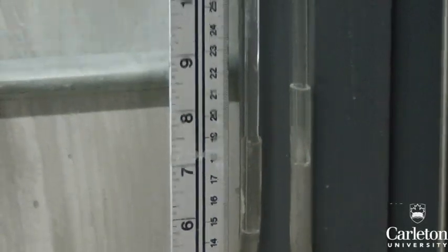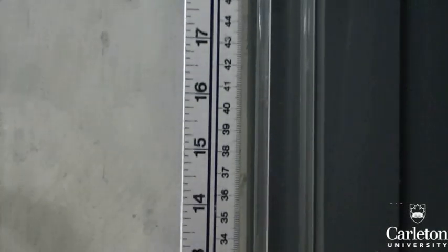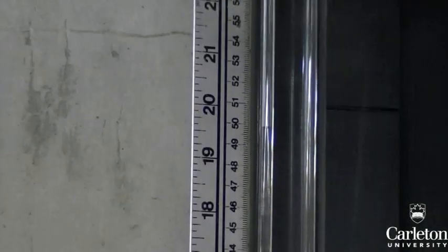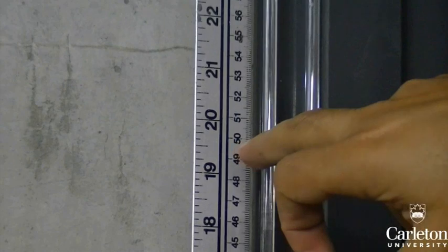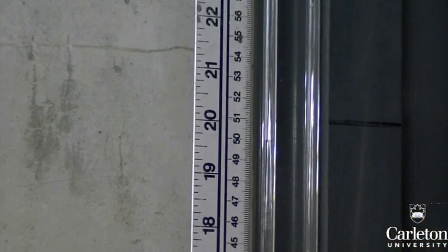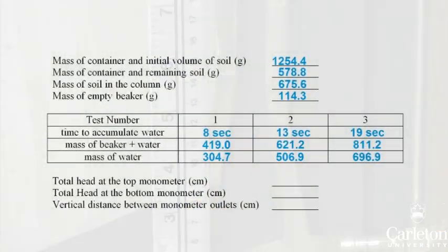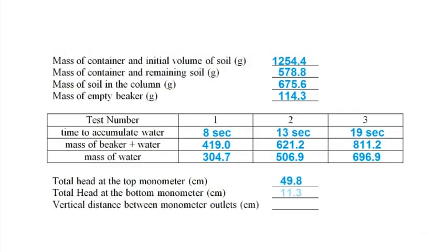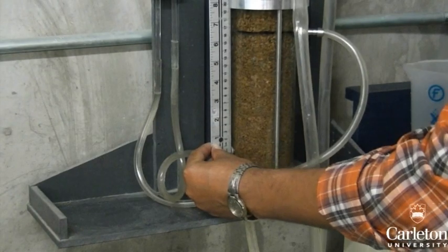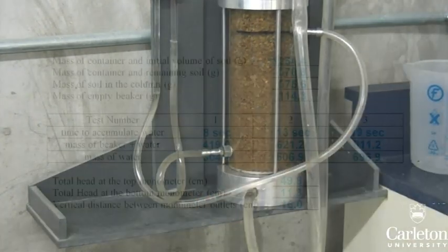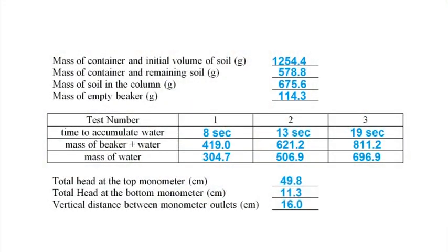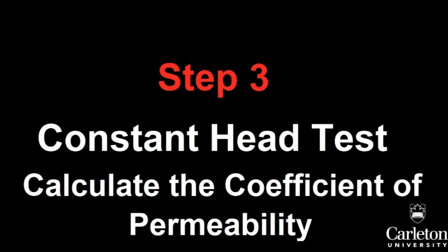Before we finish, we need to calculate the head applied to the sample. To do this measure the total head at each manometer from the base of the cylinder. Here the head height of the top manometer is 49.8 cm, and 11.3 cm for the bottom manometer. Finally record the difference in height between the outlets to the two manometers. You can draw a line around the outside to help you do this. In our case this was 16 cm. We can now clean up the apparatus and proceed to the calculations.